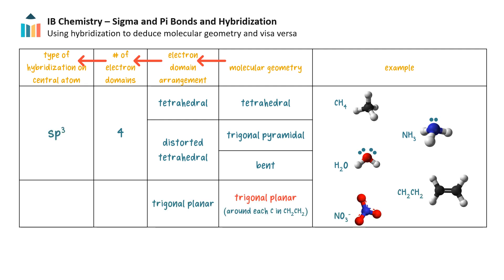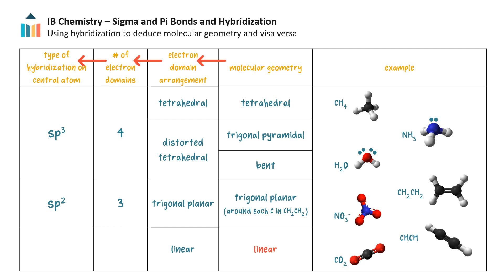The nitrate ion is trigonal planar, and so is the molecular shape around the two carbons in ethene. Nitrogen and carbon in these compounds have three electron domains. Three electron domains tells us that the central atom is sp2 hybridized. Carbon dioxide and ethyne are linear, with two electron domains around the carbons. Two electron domains indicates sp hybridization.